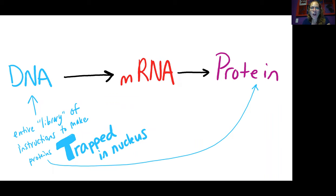Basically, our DNA molecule is going to consist of all the information that the cell needs to make proteins. It's a full library of instruction. It's a master copy, and it's housed, for eukaryotic cells, in the nucleus. And it's kind of trapped in the nucleus.